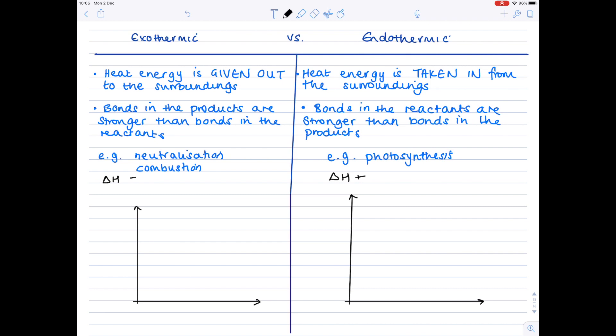We're now going to look at how we can draw enthalpy diagrams and I'll show you how to do them step by step so you can also draw them yourself. So I've started by drawing two sets of axes. It's important that you label the y-axis as being the enthalpy of the reaction and then the x-axis is the progression of the reaction.